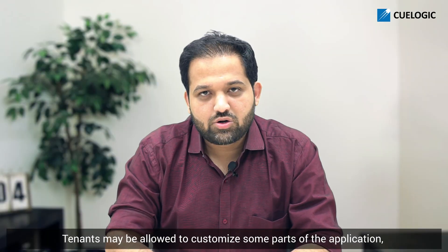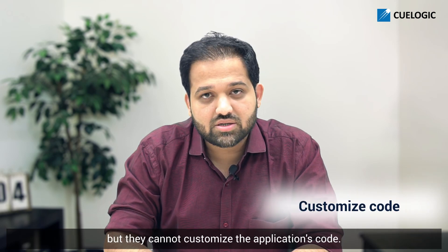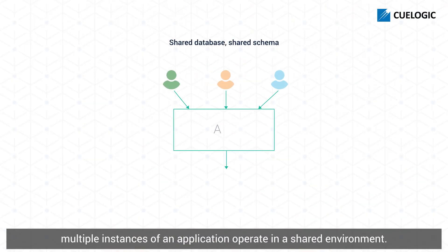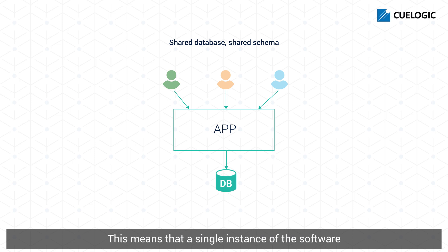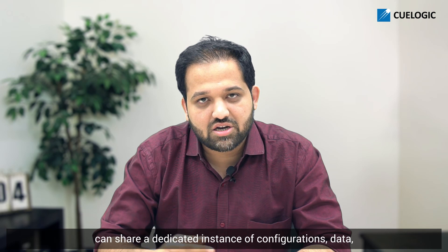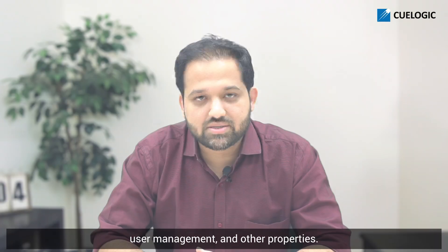Tenants may be allowed to customize some parts of the application, such as the UI or business rules, but they cannot customize the application's code. In a multi-tenant architecture, multiple instances of an application operate in a shared environment. This architecture works because each tenant is integrated physically but is logically separated. This means that a single instance of the software will run on one server and then serve multiple tenants. In this way, a software application in a multi-tenant architecture can share a dedicated instance of configurations, data, user management, and other properties.